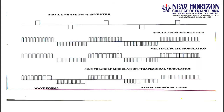For single pulse width modulation, there is only one pulse per half cycle. For multi pulse modulation, there are multiple pulses for both positive and negative half cycles. For trapezoidal modulation, the width of each pulse is different, which produces a sinusoidal effect in the output so the RMS value will be close to sinusoidal.